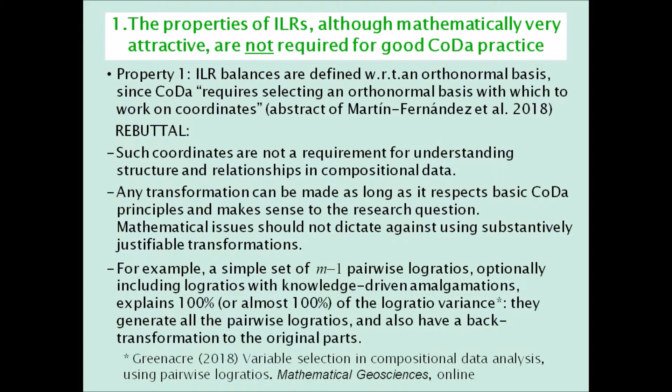For example, we have shown that a simple set of M-1 pairwise log ratios — that is, one less than the number of parts — optionally including log ratios with knowledge-driven amalgamations, explains 100% or almost 100% of the log ratio variance. They generate all the pairwise log ratios and also have a back transformation to the original parts. An example will be given soon.